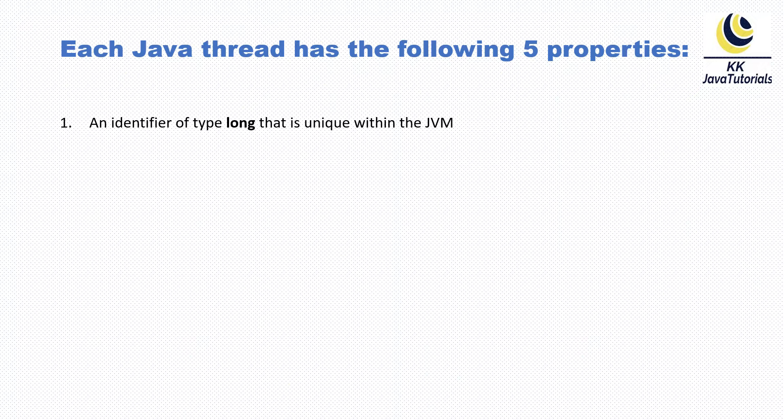Second property: name. Every thread has a name and that is of type String. Third property: priority which is of type integer.